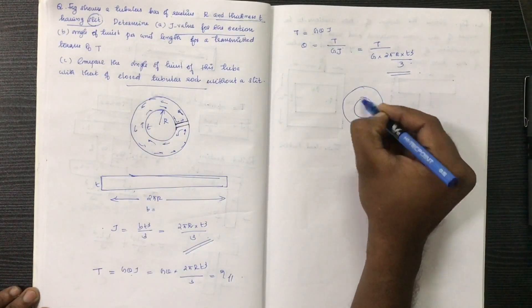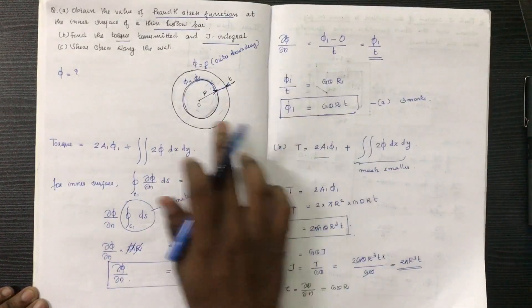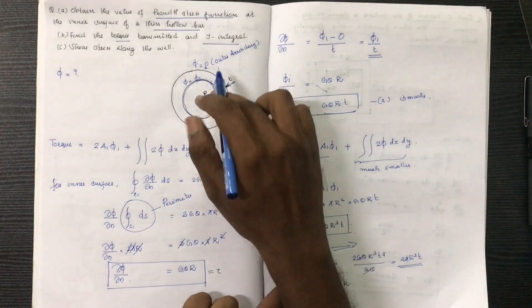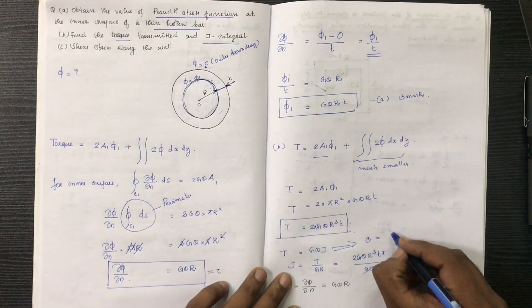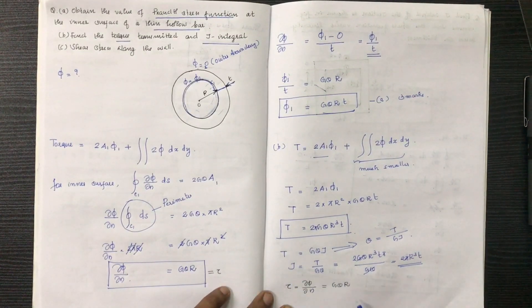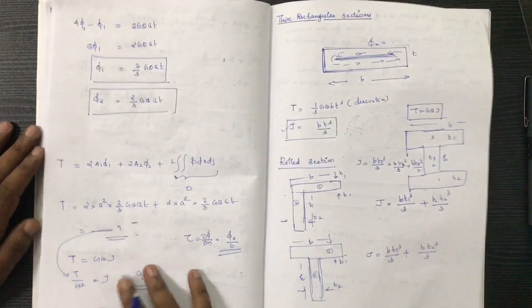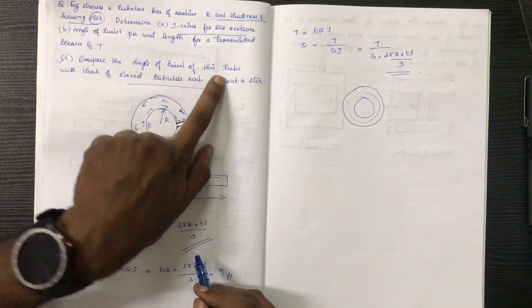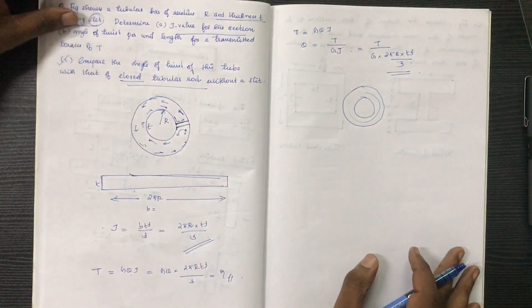Now compare the angle of twist per unit with closed tubular. Closed tubular is already done. In the closed tubular session, we have 5. This is the equation — the C part. This is only 3 pi R into J. Now T is equal to T by J into J. Now compare the angle of twist of this tube with closed tubular, with the 2 pi R into J.